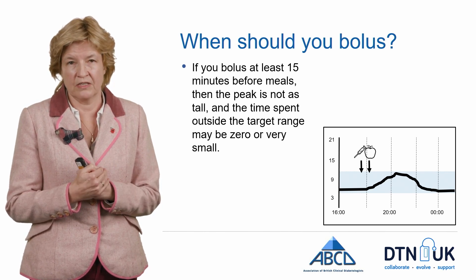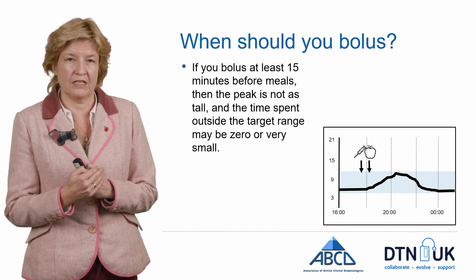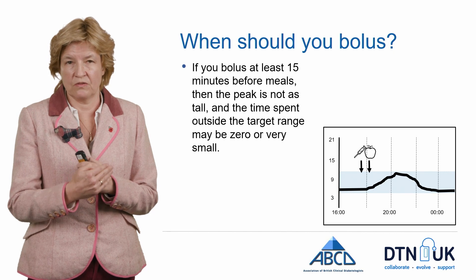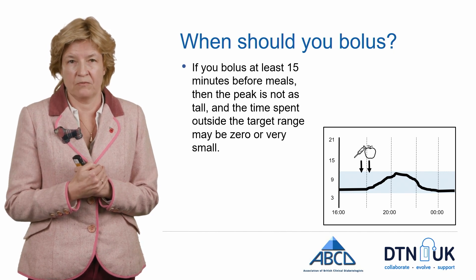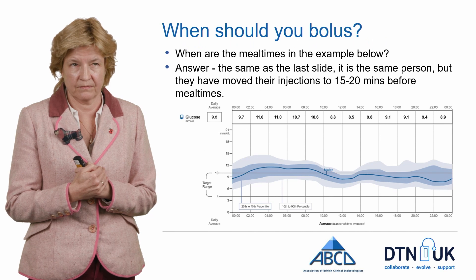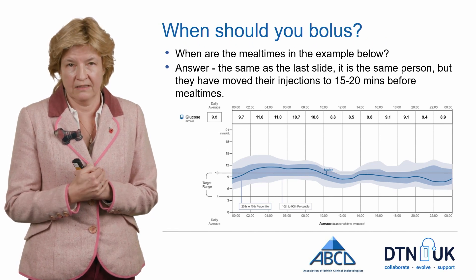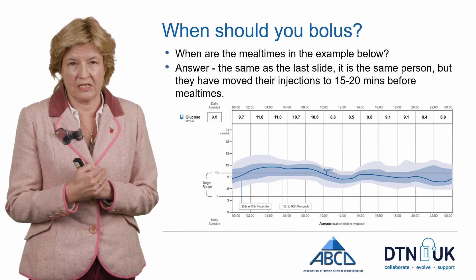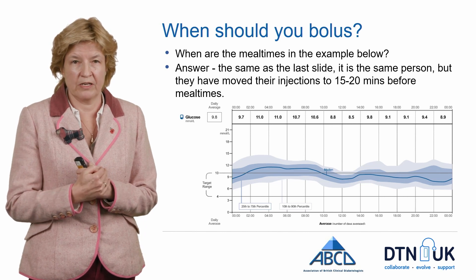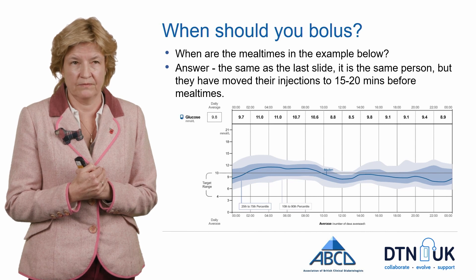Sometimes it's not possible to pre-bolus, but if you can get into a morning routine and a lunchtime routine, then even doing it two out of three times a day will help your glucose control overall. In this example we can't tell when the user is eating and bolusing, but they are managing to bolus pre-meal for the vast majority of the time and their glucose remains very stable.